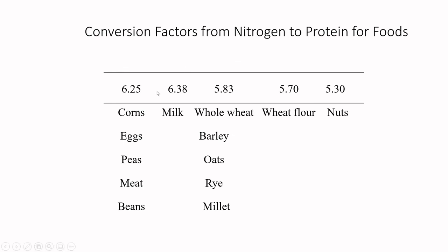The 6.25 conversion factor works fine for corn, eggs, peas, meat, and beans, but we have different conversion factors for other foods. In the case of nuts, because they have high levels of purines and pyrimidines, you have to use a completely different conversion factor — 5.3. So it's important to be aware that in the case of Kjeldahl or Dumas, where we're measuring just nitrogen, there are lots of other nitrogen sources that can be very confounding.